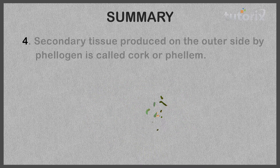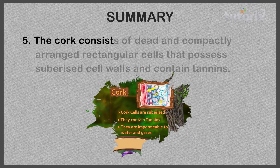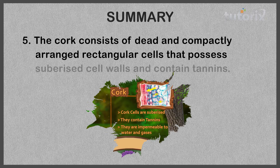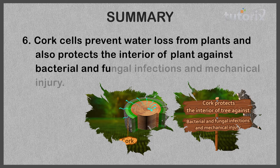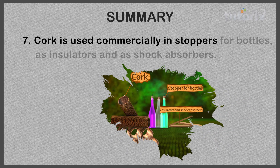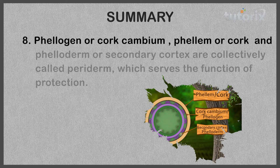The secondary tissue produced on the outer side by phelogen is called cork or phelim. Cork consists of dead, compactly arranged rectangular cells with suberized walls containing tannins. Cork cells prevent water loss and protect the plant interior against bacterial and fungal infections and mechanical injury. Cork is used commercially as stoppers for bottles, as insulators, and as shock absorbers.